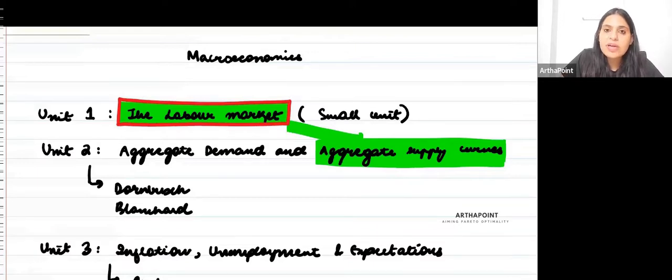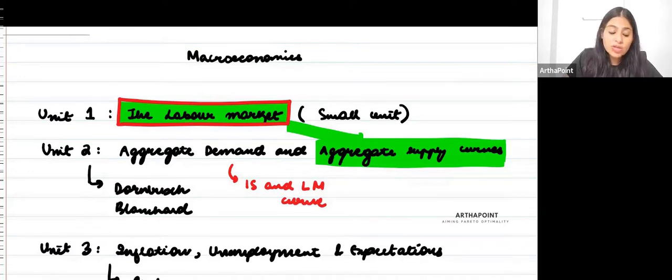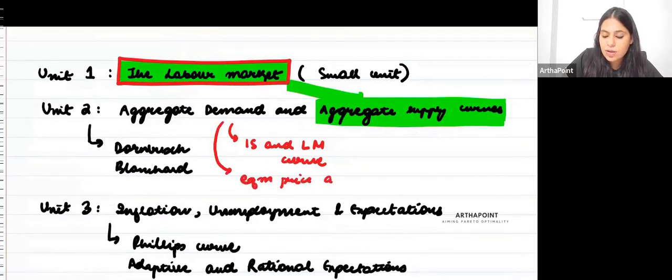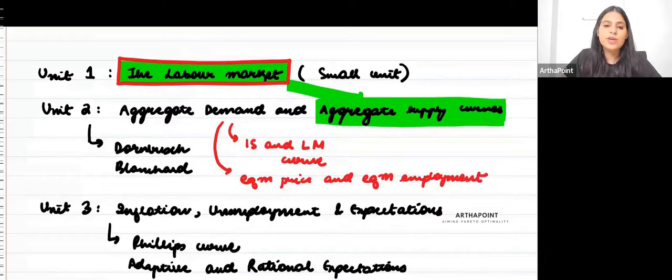You would have already known by now what is the IS and the LM curve. The aim is to use the concept of the IS and LM curve to help you understand what is aggregate demand. Once you understand aggregate demand and aggregate supply, the aim is to find the equilibrium condition, and from there determine the equilibrium price and equilibrium employment.